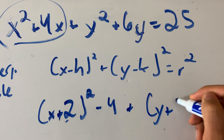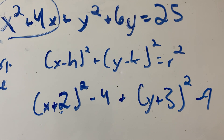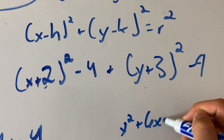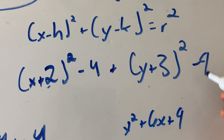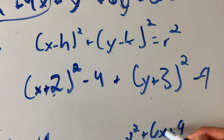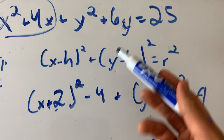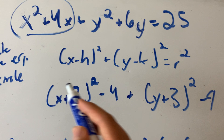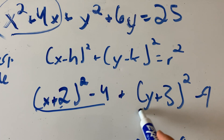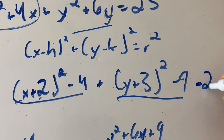Let's do the same thing for Y. Y squared plus 6Y becomes Y plus 3 squared minus 9, right? When you distribute, you get Y squared plus 6Y plus 9 — the minus 9 cancels out with the plus 9, and you're left with Y squared plus 6Y. Just like that. So this is equivalent to that, and equals 25.